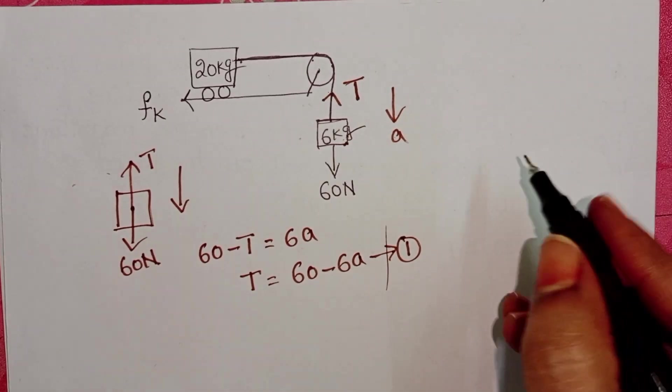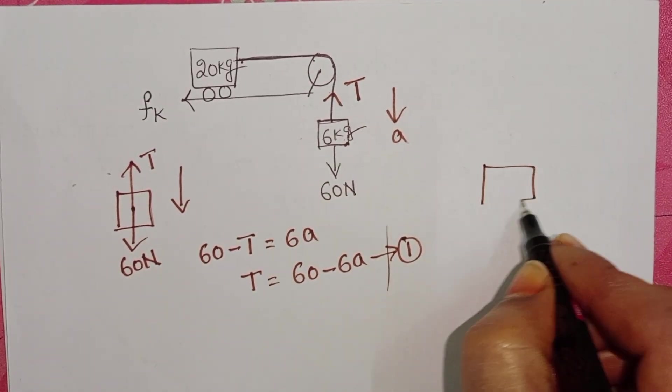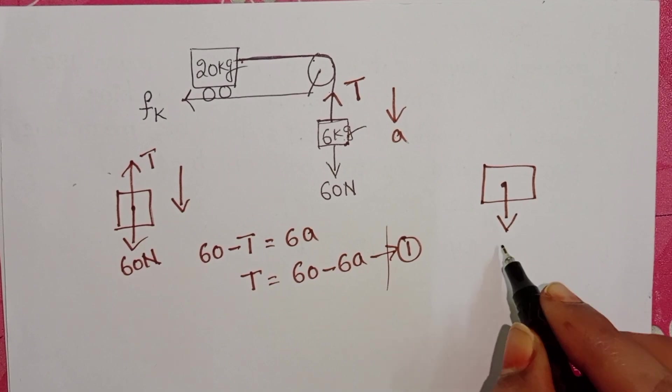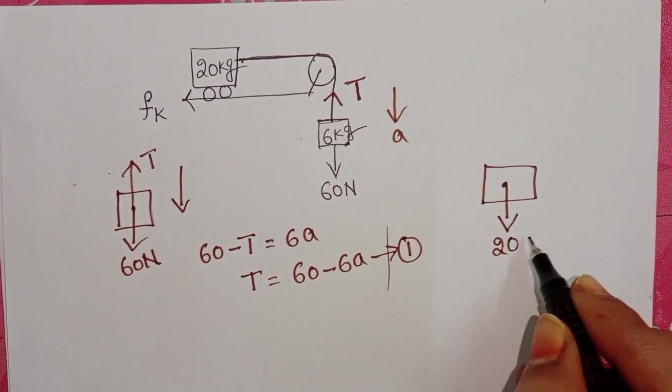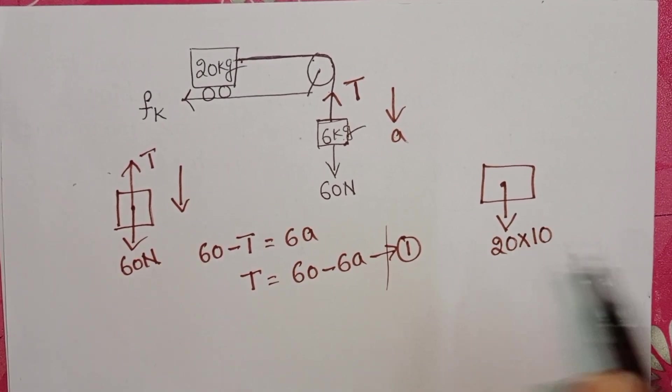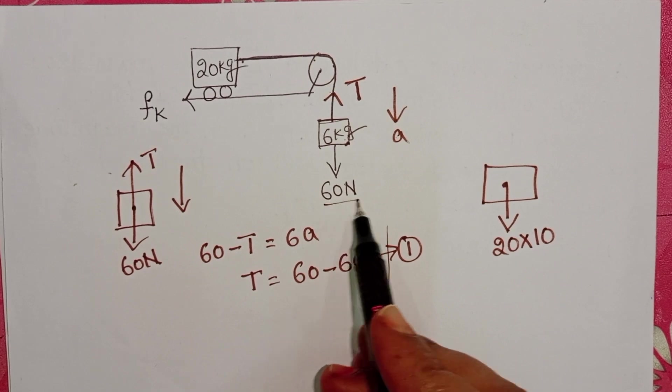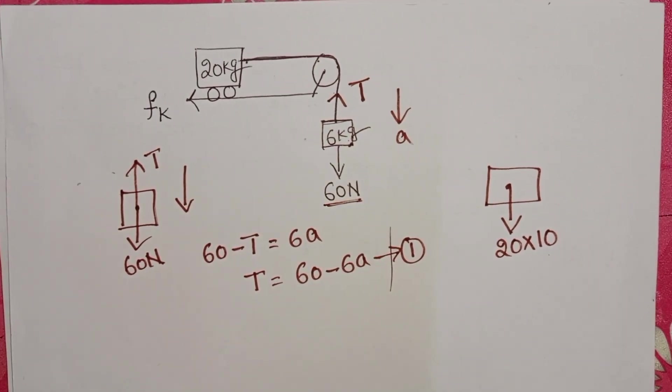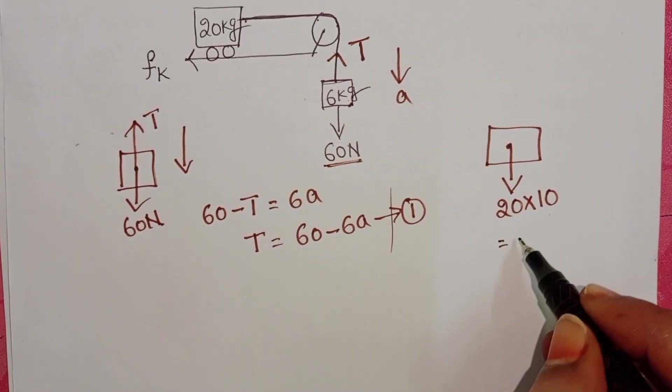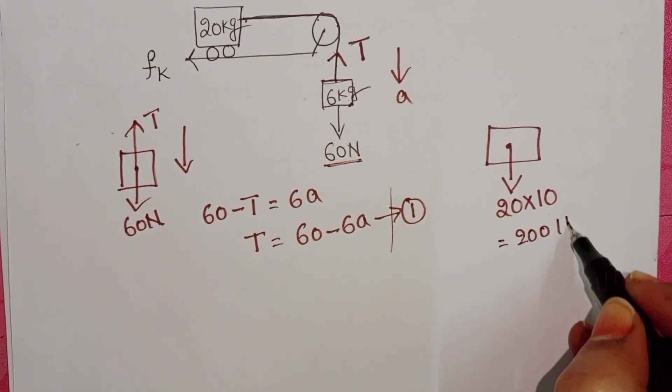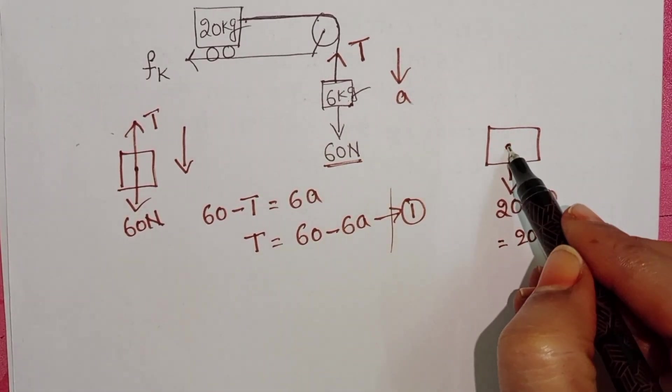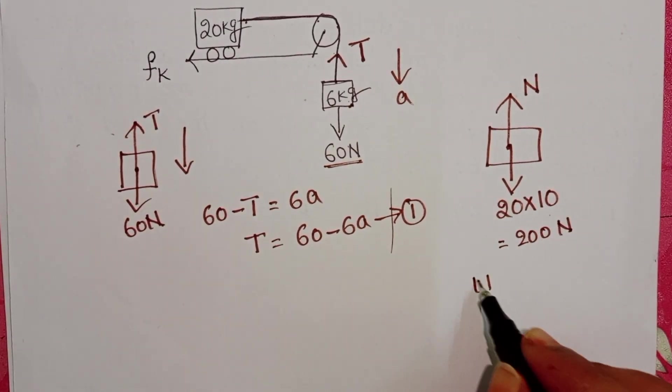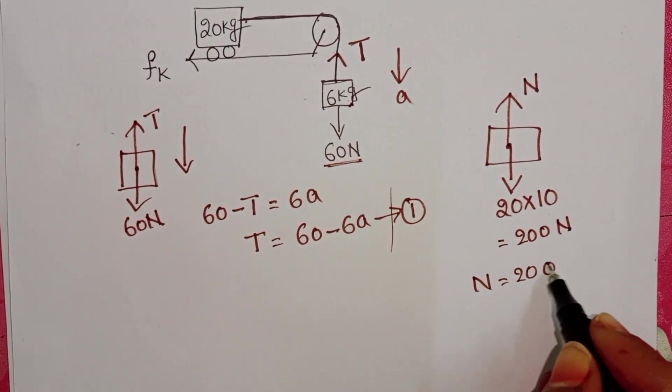Weight of the trolley acts in the downward direction: 20 times g. Here g is 10, because the given weight is 60 N, which is 6 times 10. So g value is 10 meters per second squared. Weight of the trolley is 200 N. And this surface provides a normal reaction in the upward direction. N equals 200.